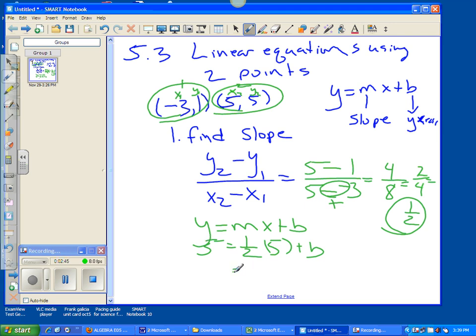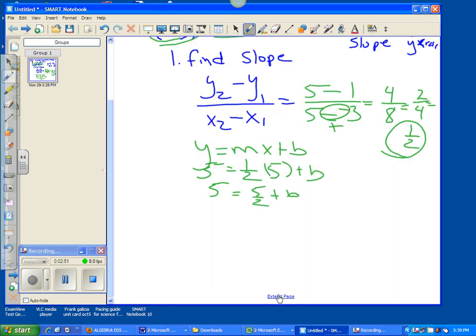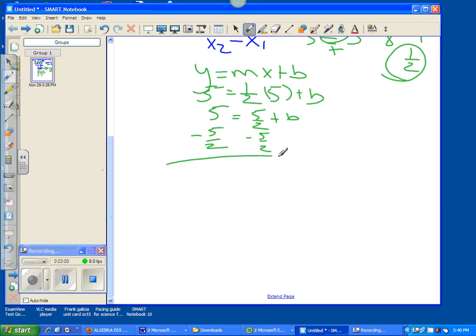This becomes 5 over 2 plus b equals 5. Then you subtract 5 over 2, subtract 5 over 2. You can do the fractions on this and realize that 5 over 2 is just 2.5. 5 minus 2.5 gives me 2.5 equals b in this case. So now I need to rewrite my formula as y equals 1 half x plus 2.5.